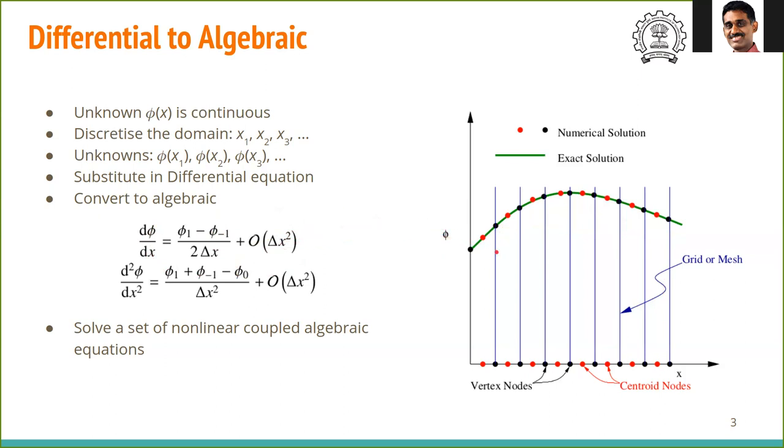Suppose φ is velocity - there are three components u, v, and w. We have three differential equations, so we'll have 3n algebraic equations. If we have velocity, temperature, and species concentration, we have five differential equations total. In discretized form, we'll have 5n algebraic equations. Solving non-linear differential equations is reduced to solving non-linear coupled algebraic equations. It's still non-linear and coupled - we're not making approximations, just converting differential to algebraic equations.